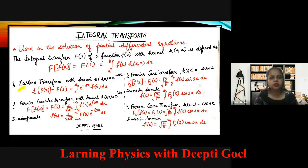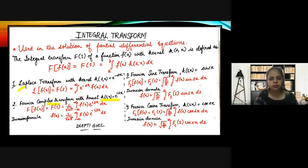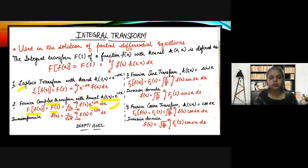Now let us discuss the Fourier complex transform. When we talk about the Fourier complex transform, the kernel associated with the function is e to the power iota sx. The Fourier complex transform is f(s) equal to 1 over root 2π, integration from minus infinity to plus infinity of f(x) e to the power iota sx. The kernel associated with the Fourier complex transform is e to the power iota sx, with limits from minus infinity to plus infinity.